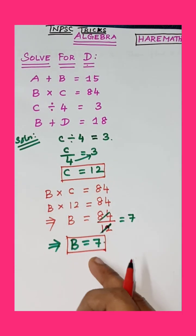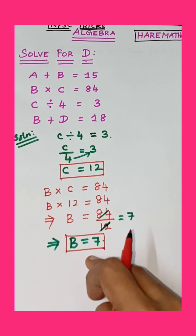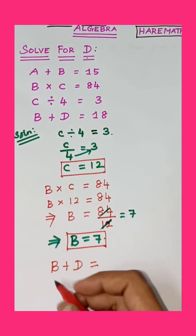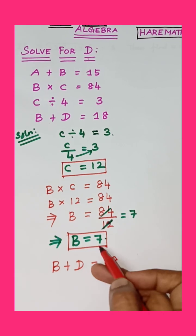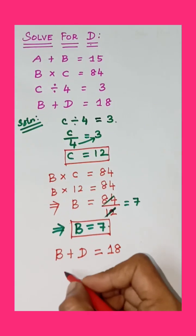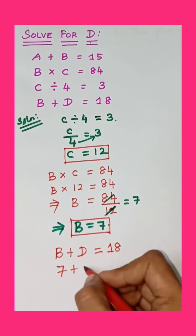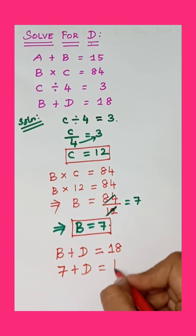B value is substituted. Next one: B plus D equals 18. Substitute the value 7: 7 plus D equals 18.